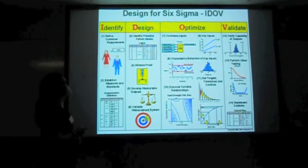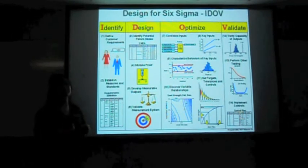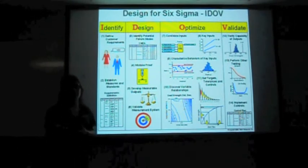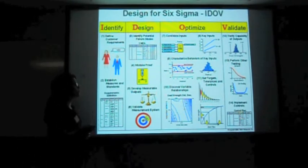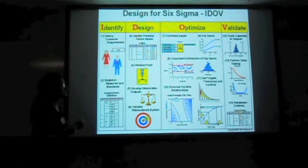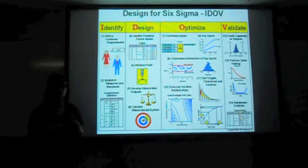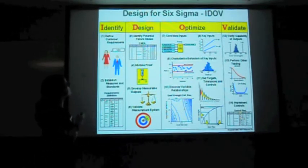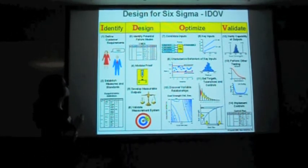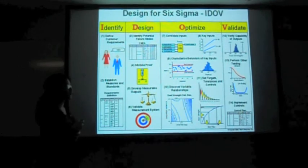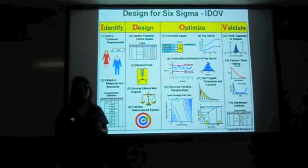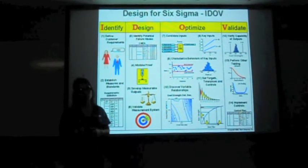This slide shows the design for Six Sigma. These are some of the steps that Six Sigma must target in order for the process to work — it goes from defining the customer requirements all the way down into implementing the controls.